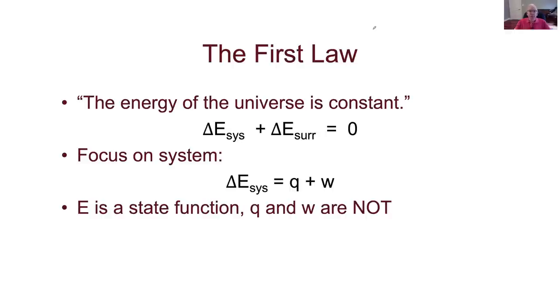The universe is broken down into two things: the system, generally loosely defined as the part of the universe we care about, and the surroundings, which is everything else, the things that are not the focus of our current thought. For our purposes, the system is generally going to be the collection of atoms or molecules that are in the chemical reaction we're looking at.